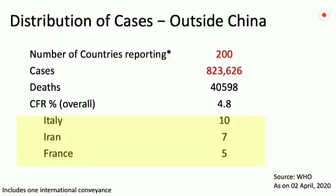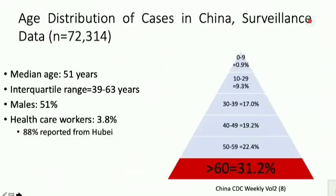Distribution of cases outside of China: the numbers are dynamic and changing every day. As of 2nd April, more than 200 countries were reporting cases outside of China, with established local transmission. Cases were about more than 0.8 million, and more than 40,000 deaths have been reported. The case fatality rate overall outside of China is nearly 5%. The case fatality rate is not uniform across the globe — Italy has a case fatality rate of 10%, Iran 7%, France 5%.